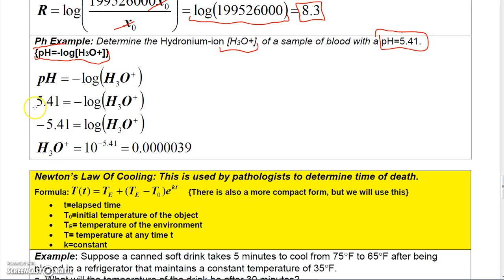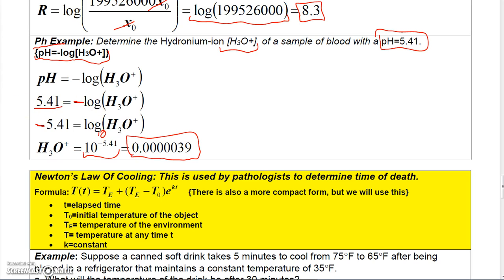Let's plug in a pH value of 5.41. It doesn't work well to have a negative in front of the log, so we multiply both sides by negative one. That moves the negative to give -5.41, and the negative on the log side cancels. Since this is base 10, we rewrite in exponential form: 10 to the negative 5.41 equals the hydronium ion. Plugging into the calculator gives a hydronium ion concentration of approximately 0.0000039.